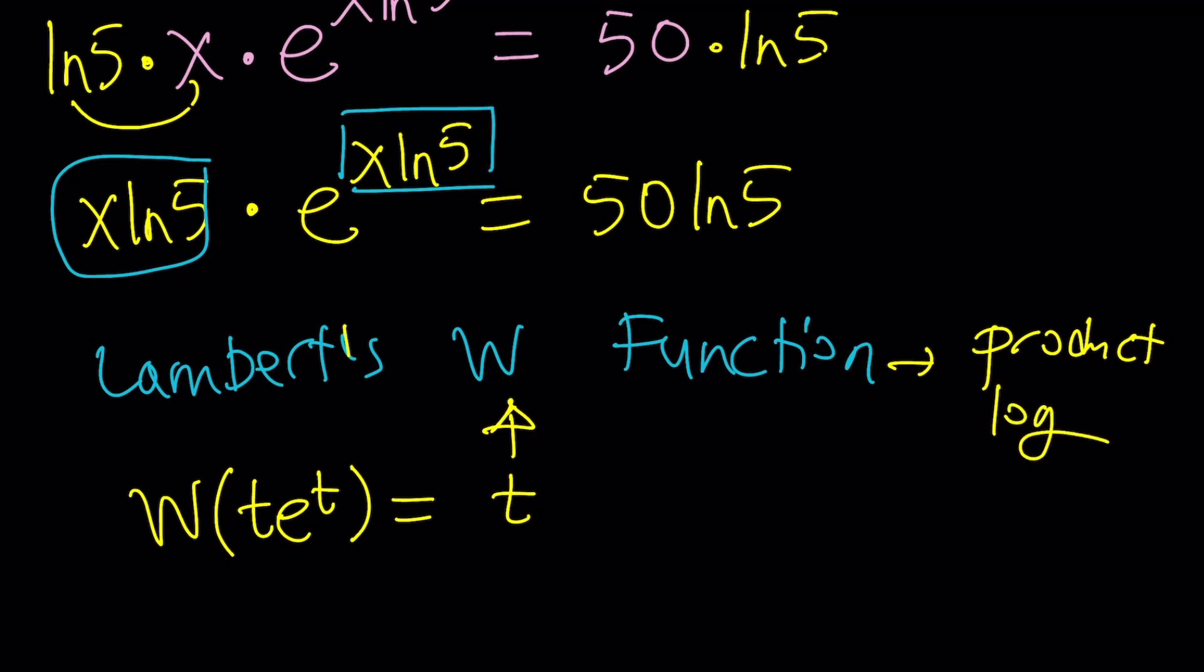So if you're going to enter this in Wolfram Alpha, you can basically write product log with no space and then parentheses, you can use a number like 0 or 1 or any other branch and then comma, whatever the value you're trying to W.